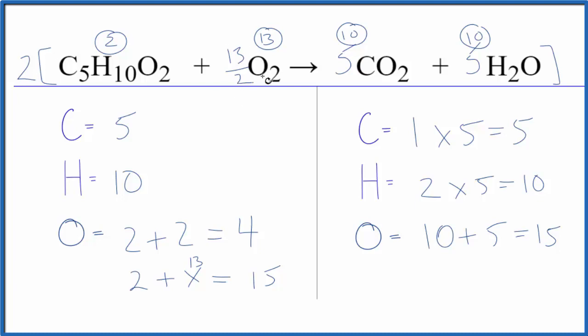figure out what you need to put in front of the O2 so that you balance the oxygens. In this case we needed to get it to be fifteen, so we put thirteen over two. This is Dr. B with the balanced equation for C5H10O2. This video goes out to user sweetener. Thanks for watching.